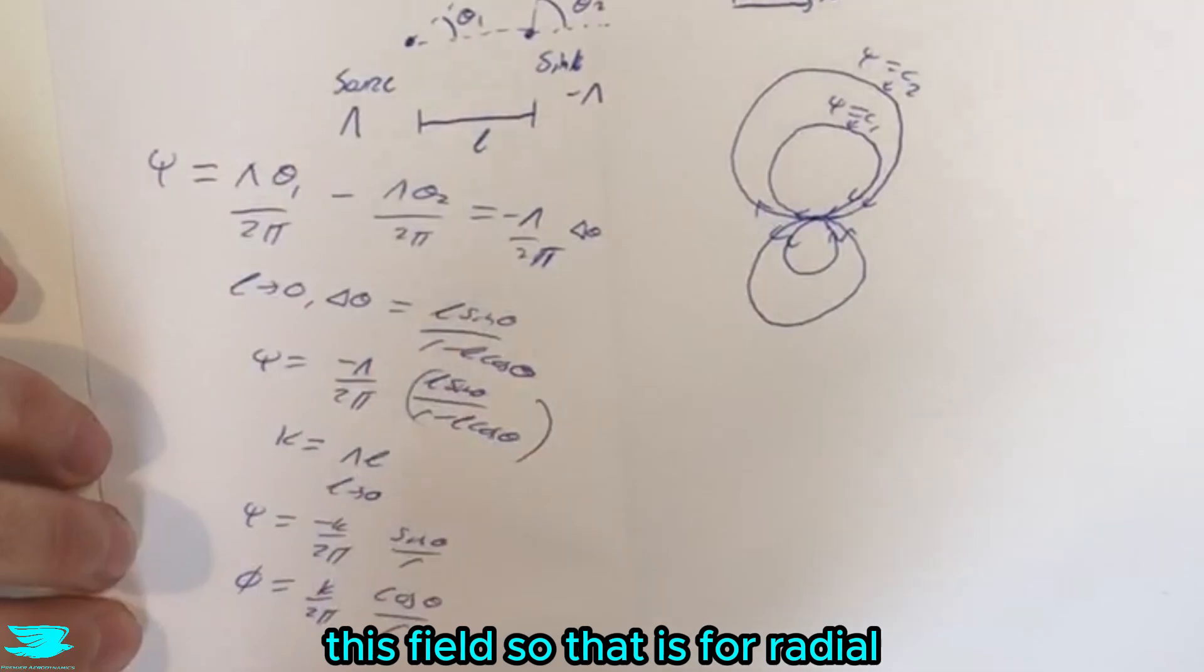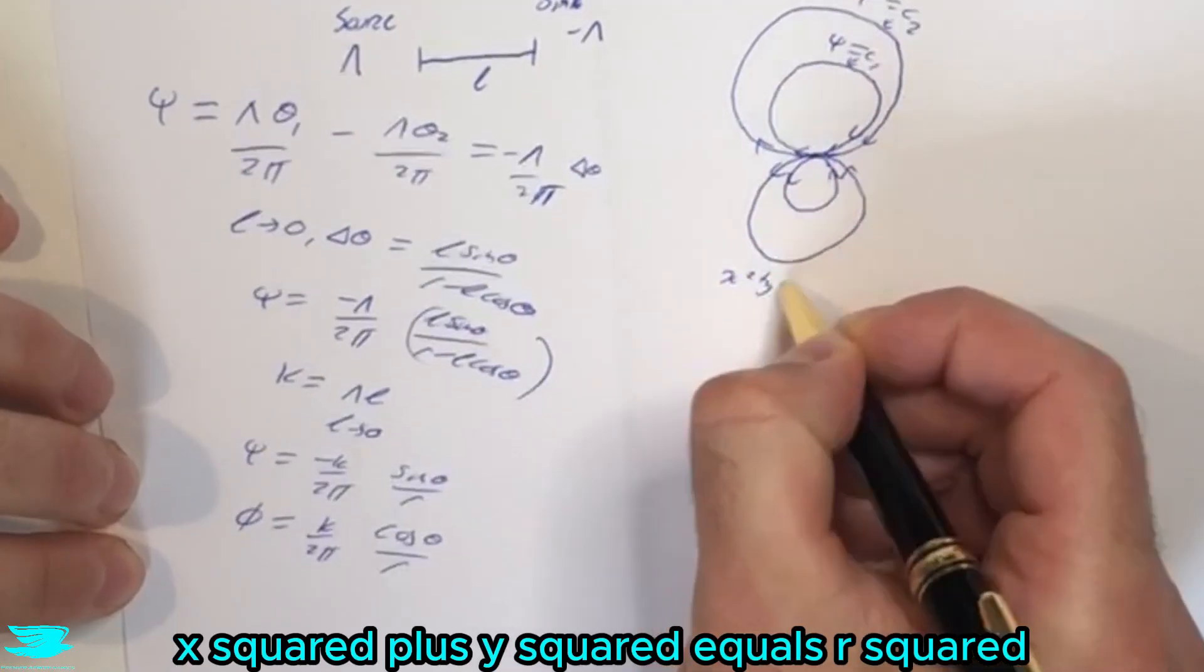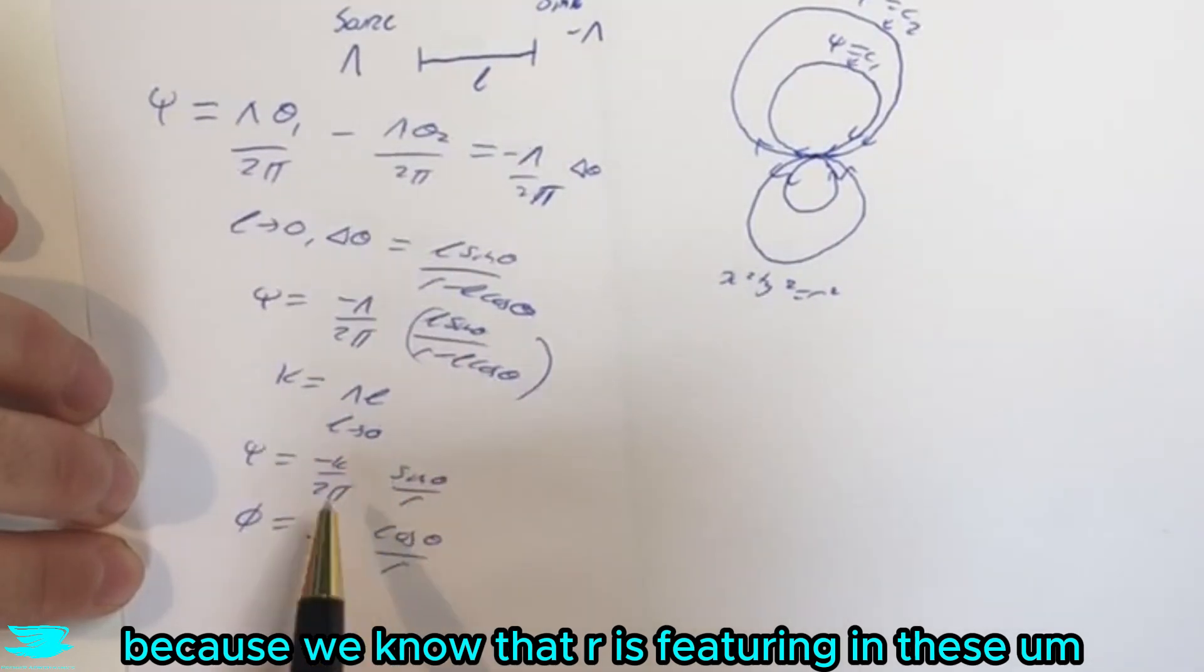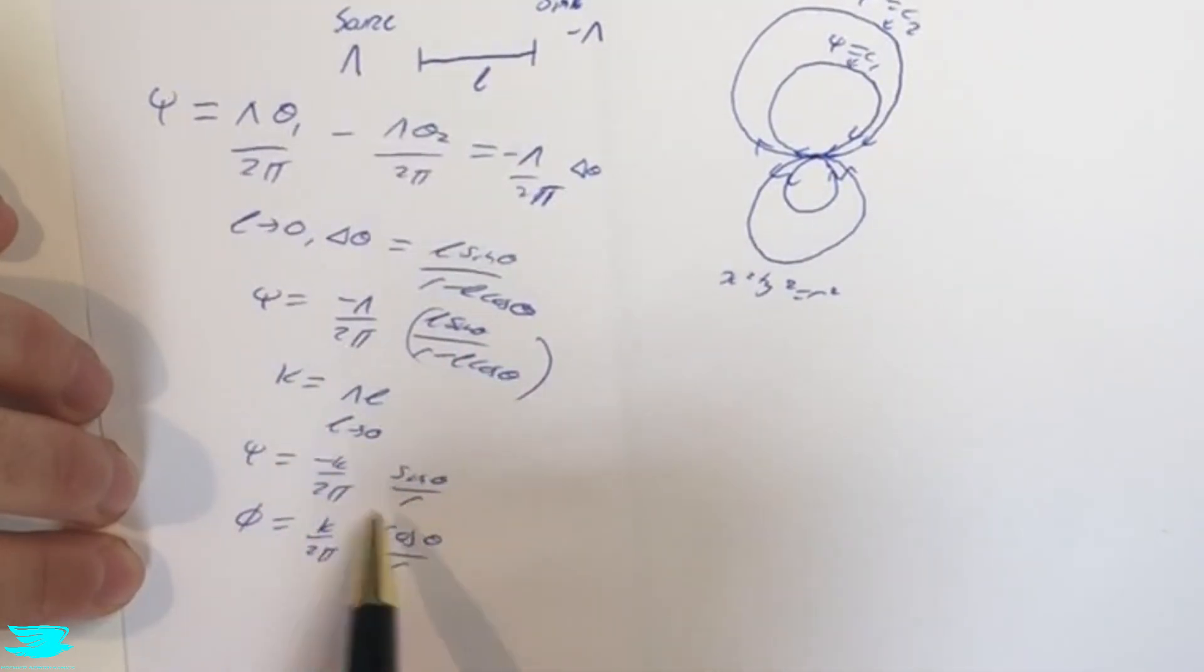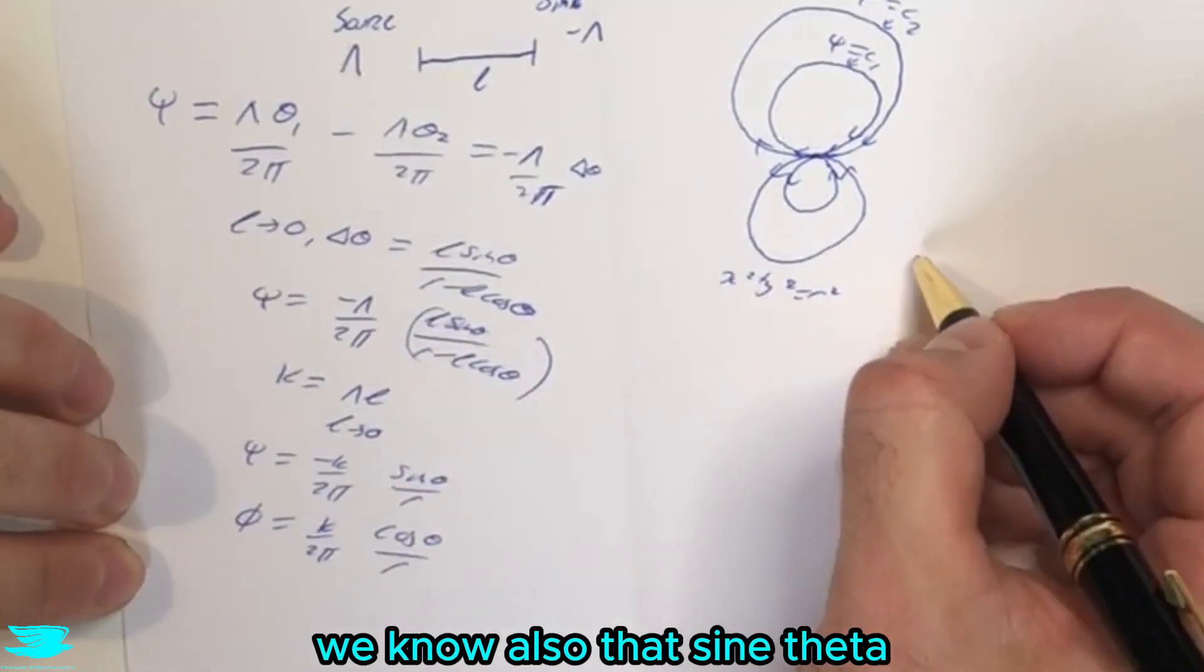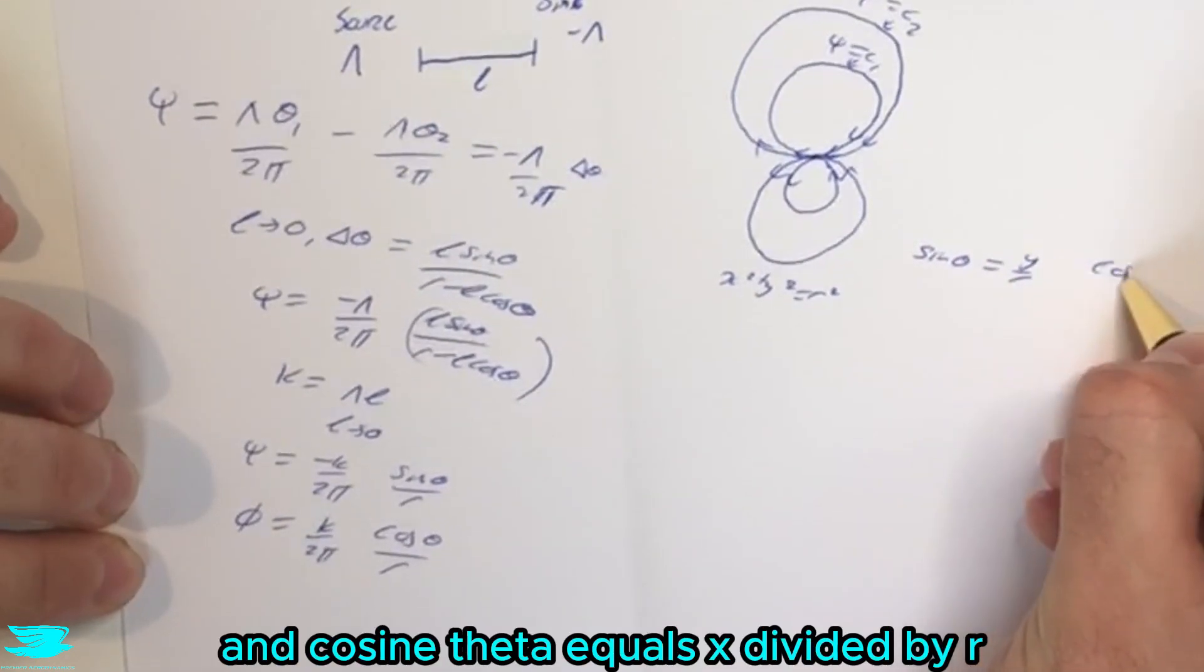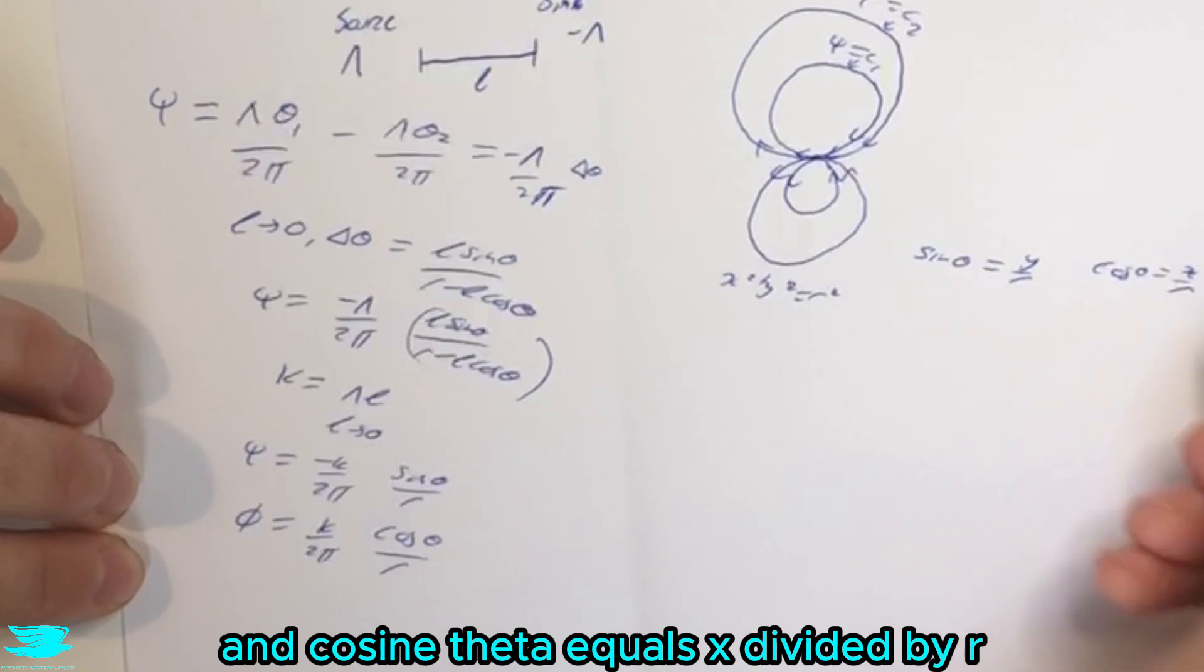So that is for radial. Let's go to the Cartesian now. x squared plus y squared equals r squared. And that's important because we know that r is featuring in these functions here. So we know also that sine theta equals y divided by r, and cos theta equals x divided by r.